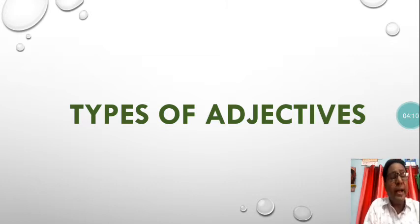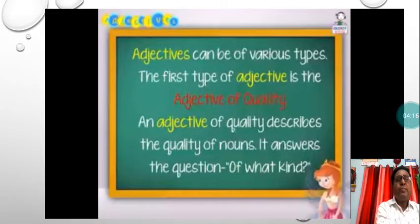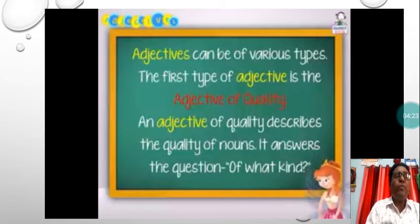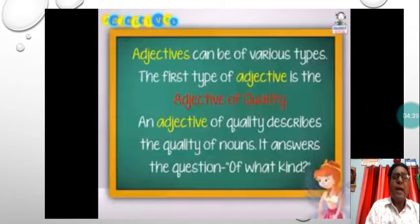As I told you, there are nine kinds of adjectives. Let us learn them one by one. The first type is adjective of quality. Adjectives can be of various types and the first type is the adjective of quality. An adjective of quality describes the quality of a noun and it answers the question: of what kind?